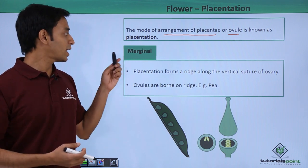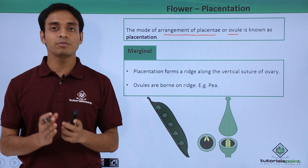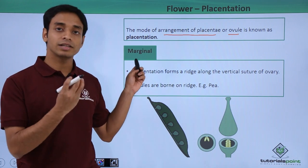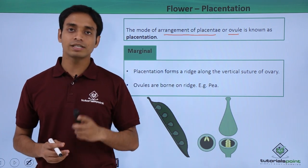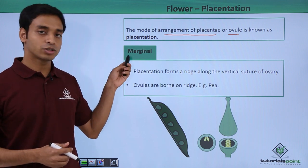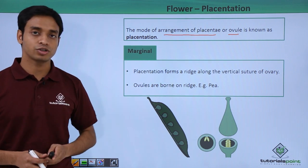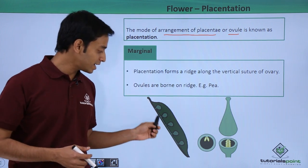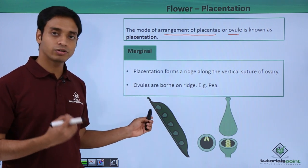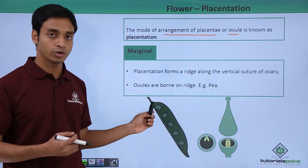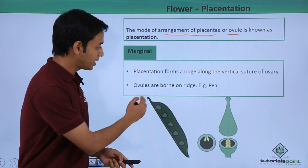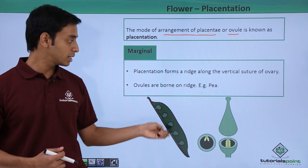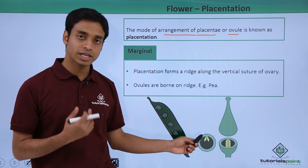Placentation can be of different forms based on how the ovules are arranged inside the ovary. The first type is known as marginal placentation. Here, a ridge forms inside the ovary and all the ovules are born on that ridge. A very good example of marginal placentation is the pea.